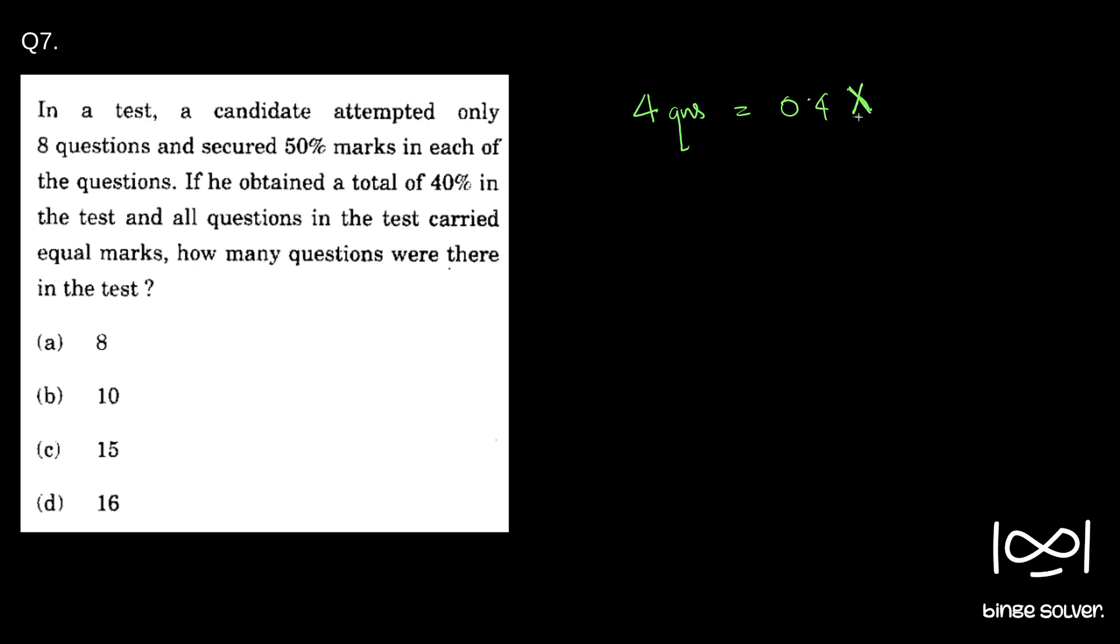So for full X marks, how many questions should be there? It is easy: 4 ÷ 0.4 which will become 10 questions. Right away we can mark the answer as B. If there is any doubt, we will do it in the proper form.